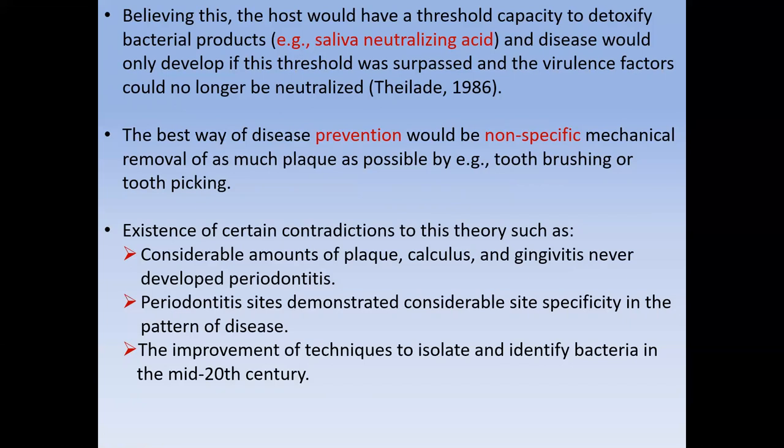According to this theory, the best way to prevent disease is to prevent the accumulation of dental plaque by mechanical removal — tooth-brushing or tooth-picking. However, certain contradictions led to abandoning the non-specific plaque hypothesis. For example, certain amounts of plaque and calculus exist, yet gingivitis never develops into periodontitis. If quantity were the only factor, this process should sequentially lead from plaque to gingivitis to periodontitis. But many people remain with gingivitis for a whole lifetime without progressing to periodontitis, contradicting this theory.